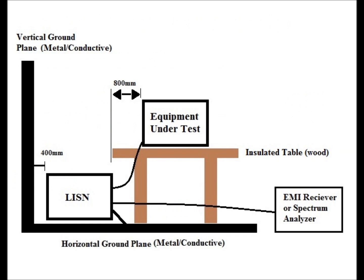Here we have the physical setup for our measurement. The equipment under test is located on an insulating wood table, separated by 800 millimeters from our LISN, which is placed on the horizontal ground plane and electrically bonded to it. The vertical ground plane is 400 millimeters away from the LISN and also electrically bonded to the horizontal ground plane. Typically those are plates of aluminum or copper, and they are two times the surface area of the equipment under test in that particular profile.